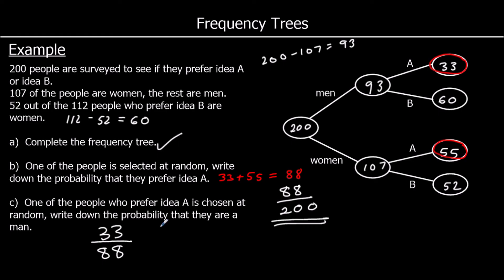Again, we could simplify it. They're in the 11 times table. But we don't have to. We don't have to simplify probability unless we are asked to.